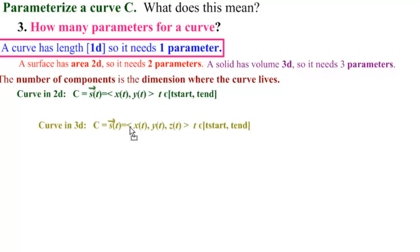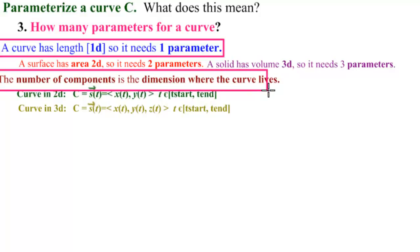The extension is a curve in 3D has three components, and a curve in 4D would have four components. So the second thing we want to remember here, the number of components determines where the curve lives.